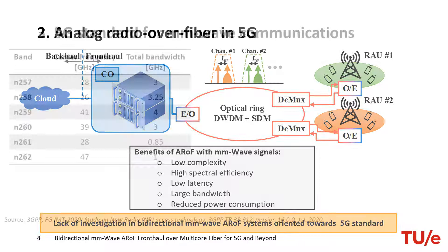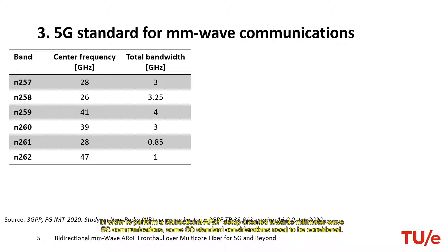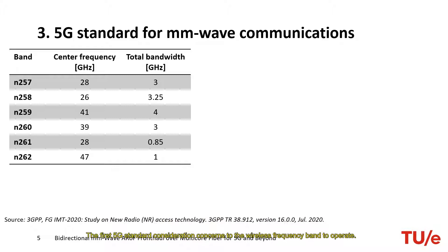In order to perform a bidirectional RoF setup oriented towards millimeter wave 5G communication, some 5G standard considerations need to be considered. The first 5G standard consideration concerns the wireless frequency band to operate. For that, 5G defines several millimeter wave bands, with the band named N258 providing the largest bandwidth. In this work, the N258 band is the selected band.